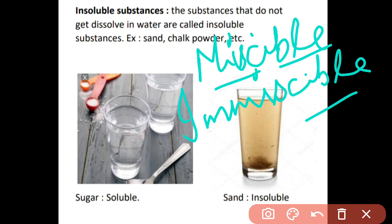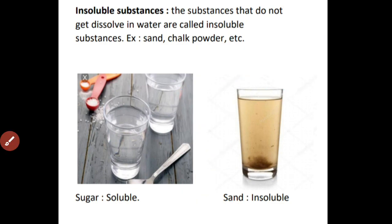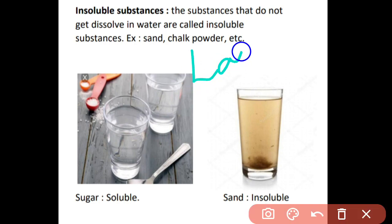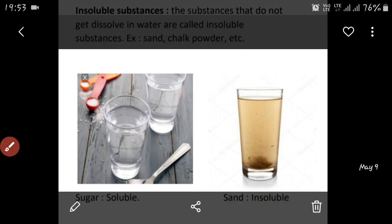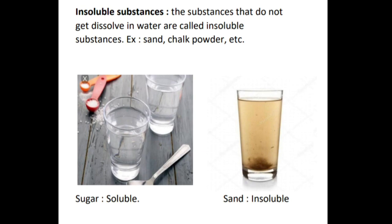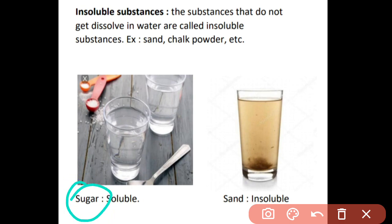On the other hand, if you put oil in water and try to dissolve it by stirring, you will see that oil forms a layer at the top of the water and will not get dissolved no matter how much you stir. These types of liquids are known as immiscible liquids. In the pictures shown, sugar is soluble in water, while sand is insoluble and deposits at the bottom of the glass tumbler.